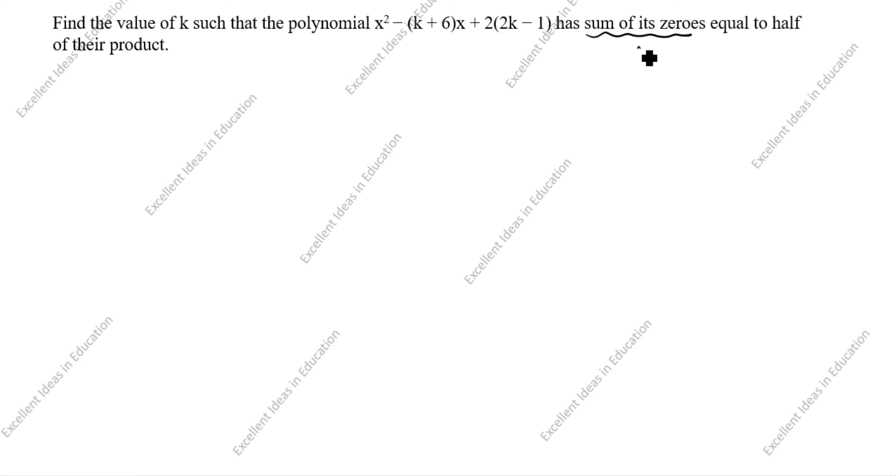What is given in this problem is that sum of the zeros, α + β, equals half of the product, which is ½(αβ). In this question, we need to find the value of k.